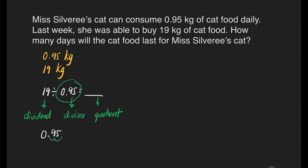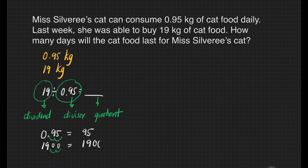So in this case, we will just move the decimal point two places and 0.95 will become 95. We will do the same for our dividend. How many places did we move in our divisor? That's two. So we will also move two decimal places in our dividend — that's place 1 and 2 — and we'll put zeros in the empty spaces, which gives us 1,900.